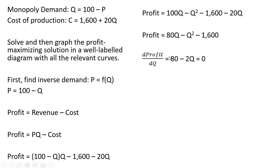And now we can take a derivative. We can take the derivative of the profit function with respect to Q, the quantity of output. And we're going to set that result equal to zero. So the derivative of 80Q is 80. And the derivative of minus Q² is just minus 2Q. And this minus 1,600 is treated as a constant, and the derivative of a constant is zero.